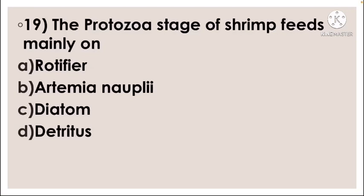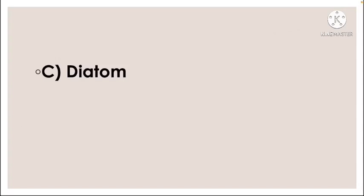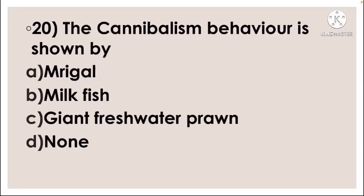Next question: The protozoea stage of shrimp feeds mainly on — option A rotifer, option B Artemia nauplii, option C diatom, option D detritus. The correct answer is option C, diatom.